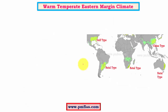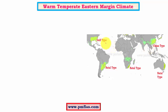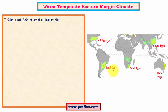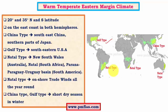This type of climate has many regional variations and based on those it is classified into different types. For example, we have the Natal type in the southern hemisphere, the China type in southeast China, and the Gulf type in the southeast American region. The China type has a somewhat well-pronounced dry season, whereas in the Gulf type the dry season is very short, and in the Natal type there is no dry season. All these regions occur within 20 to 35 degrees north and south of the equator.